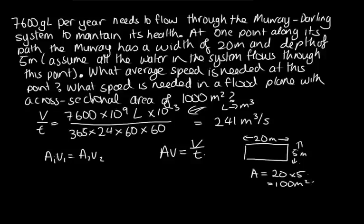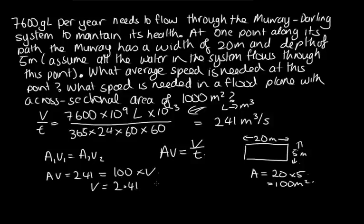And so we can get the speed. We've got AV equal to 241, and A is 100 times the speed, so the speed equals 2.41 metres per second. That is a fairly fast speed for a river to flow, as we would expect if all the water in the Murray-Darling was concentrated into such a small area.